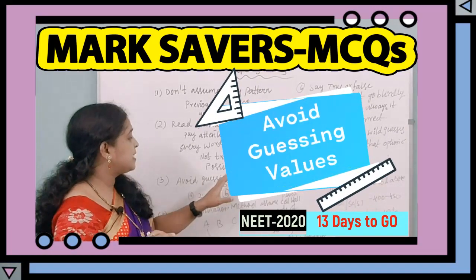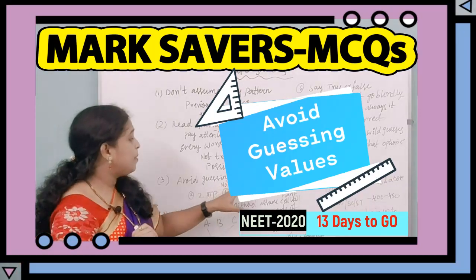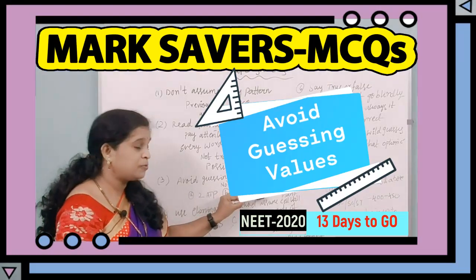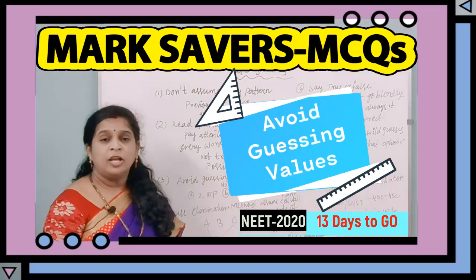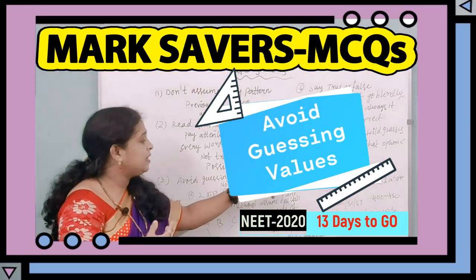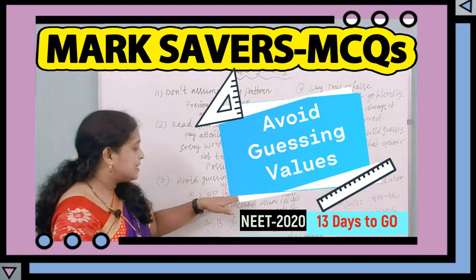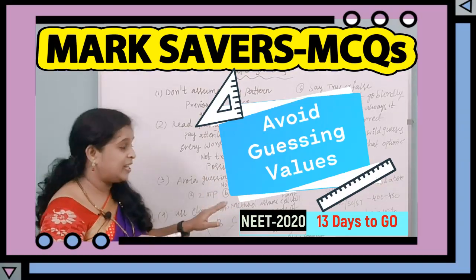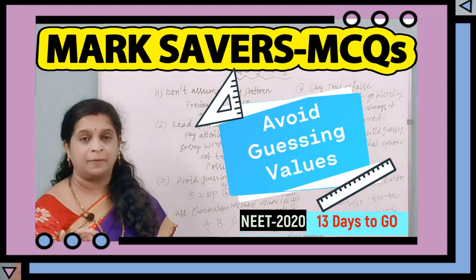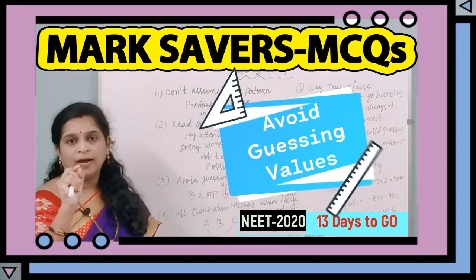The third lifesaver is: avoid guessing values. For example, in a biology question on glycolysis asking for the number of ATP released — option A is 2 ATP, B is 3 ATP, C is 4 ATP, D is 20 ATP. Students often think A, B, C are too close to each other, so they blindly pick D. Please don't do that. You have to read the question carefully — sometimes the answer is within those three closer options. Avoid wild guesses and try to solve the question properly before selecting the correct option.